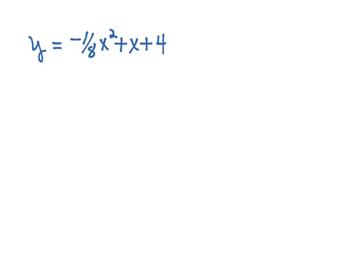For a quadratic function, that maximum is going to occur at the vertex, and we've learned that the vertex has the coordinates negative b over 2a, f of negative b over 2a.